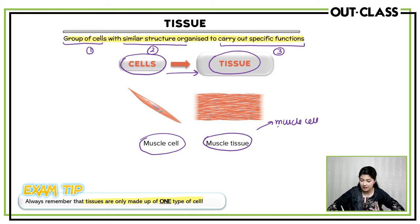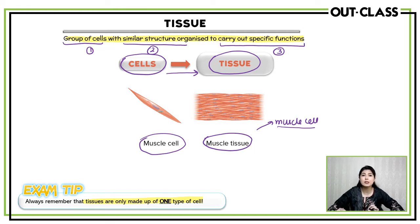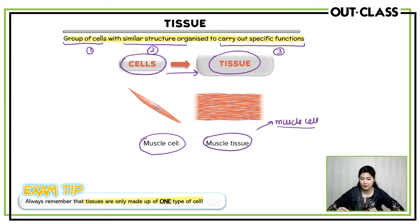One important point — one tissue only contains one type of cell. Don't forget this; it will help you in exams. One tissue contains one type of cell.